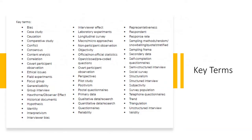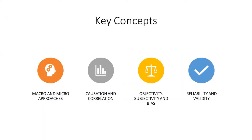You are aware that in your syllabus there is a list of key concepts which you should cover as part of this chapter on research methodology. Since you have considered most of the concepts, there are only a few left which need further elaboration. We chose four sets of concepts: in the previous lesson we considered macro and micro approaches, causation and correlation. Today we will look at objectivity, subjectivity and bias, and reliability and validity.